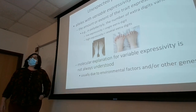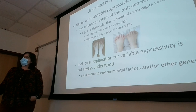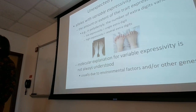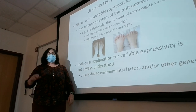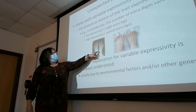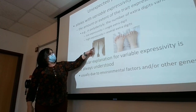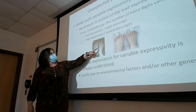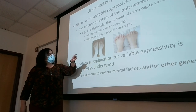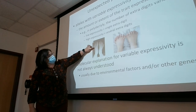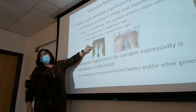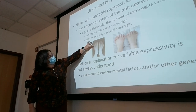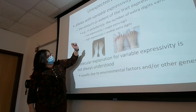We can use polydactyly again as our example. If you actually express that trait, you may express it mildly — like with the young man with the baseball who had an extra finger. Here we see two feet with just one extra digit at the end, so they have one extra toe. The bone is kind of split at the end and you wind up with two toes.